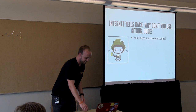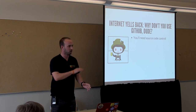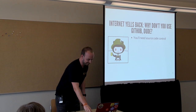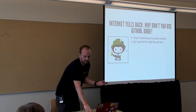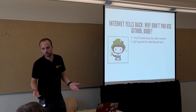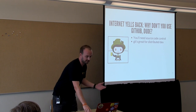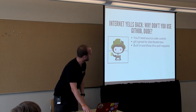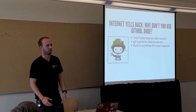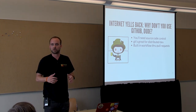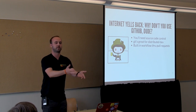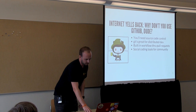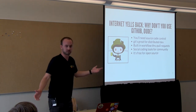GitHub has a page with all different Octocats — there's one for Halloween, one riding a bear with a saber. GitHub has figured it out — it's great. You need source code control anyway, so why wouldn't you use something like that? Git is great for distributed projects with a lot of outside contributors. It has a built-in workflow — the pull request — which encourages other people to fork your code, make changes, and contribute it back. It has an issue tracker, you can leave comments on code, and it's free for open source.